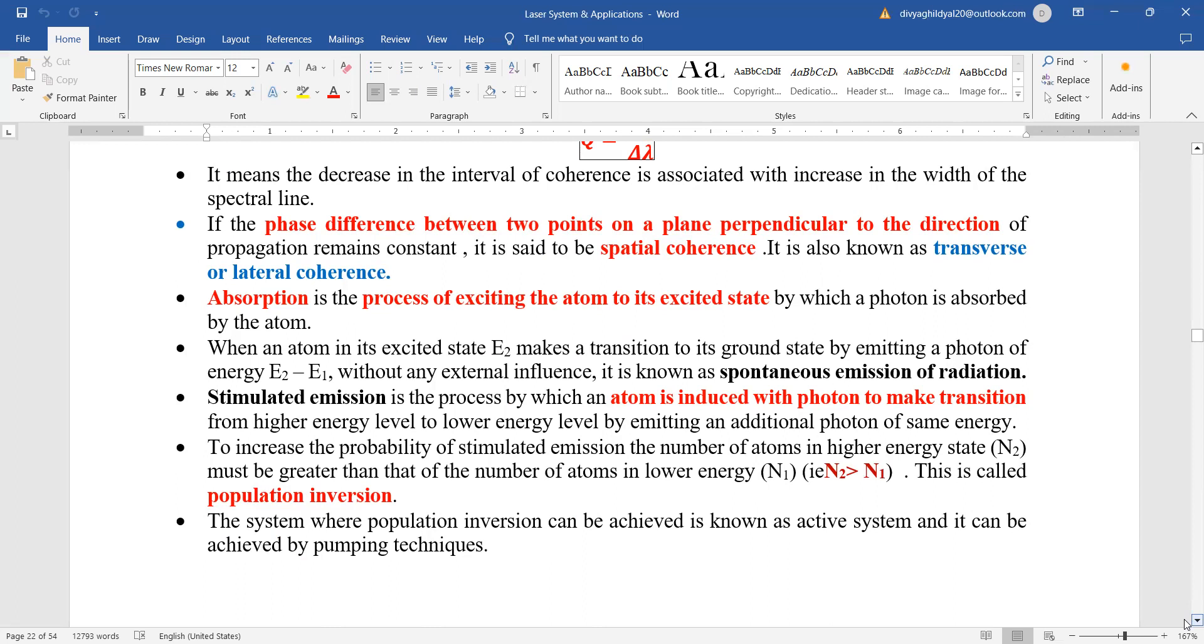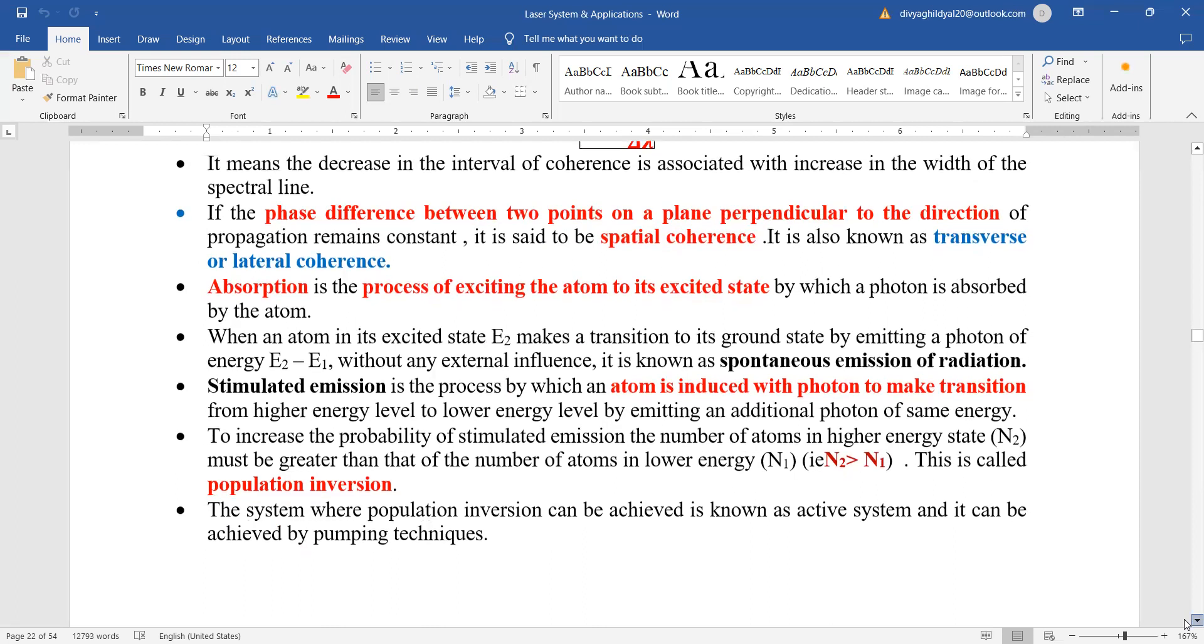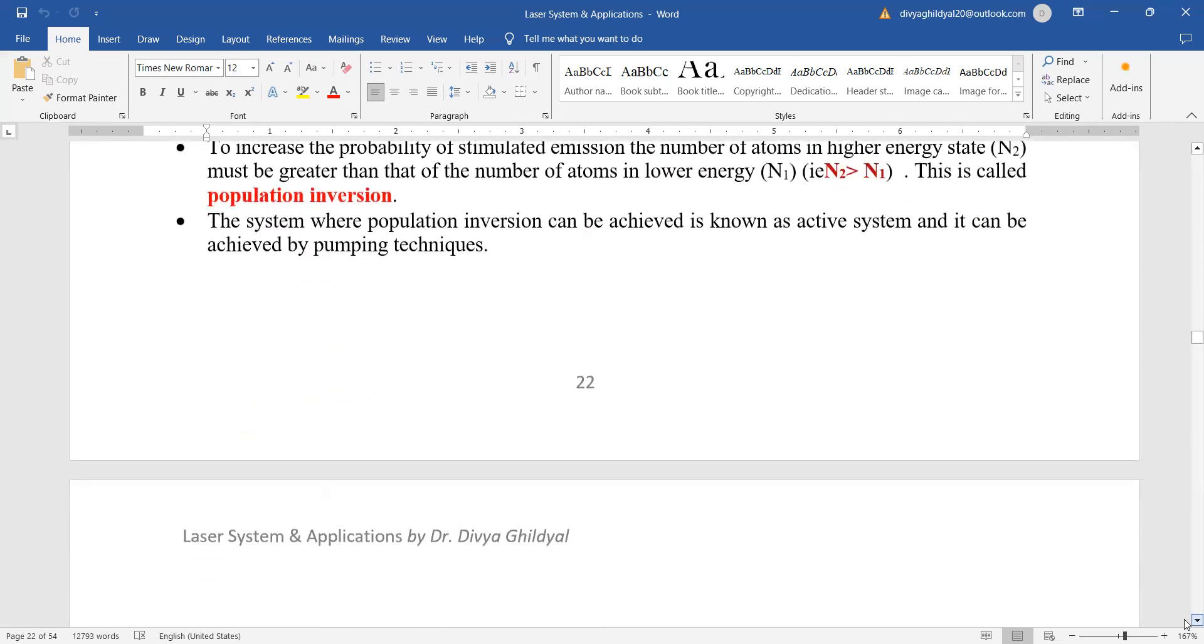System where population inversion can be achieved is known as active system and it can be achieved by various pumping techniques.